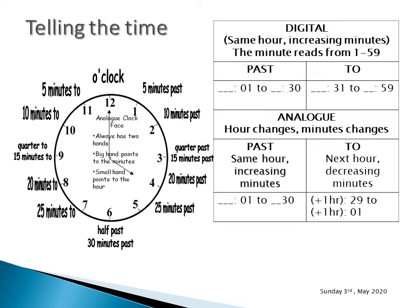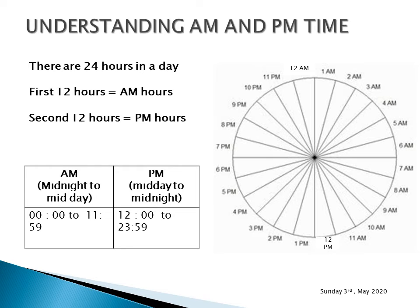When the minute hand is between 12 and 6, you're on the 'past' side: 5 minutes past 4, 10 minutes past 4, 15 minutes past 4, quarter past 4, 20 minutes past 4, or half past 4. But the moment it shifts past 6, you say it is 29 minutes to the next hour. On the 'to' side, the minutes reduce until you reach 12, and you read the time as minutes 'to' the next hour. On the 'past' side, you read it as minutes 'past' that hour.